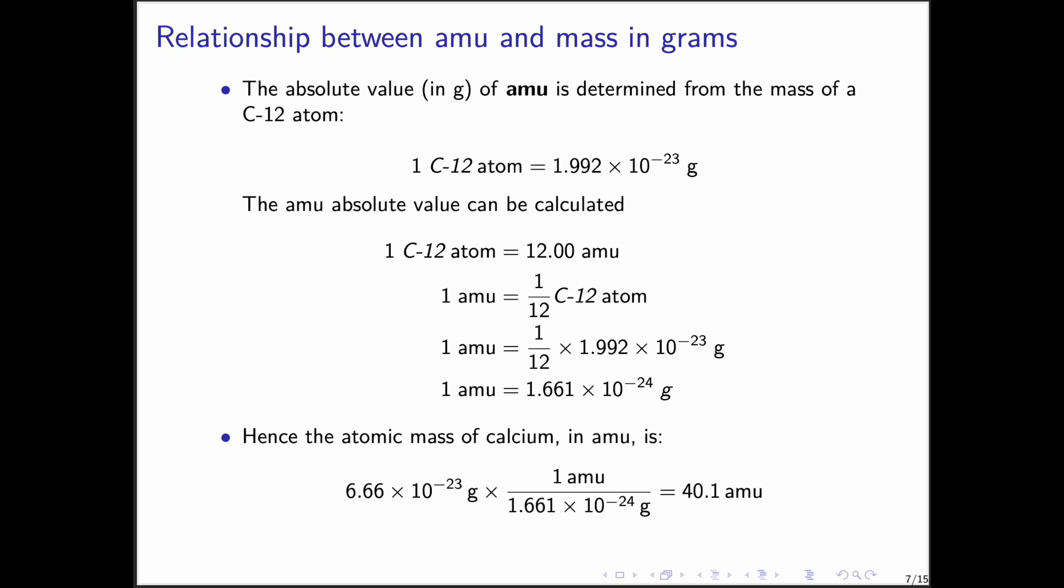We can even relate the atomic mass unit to grams. One carbon-12 atom weighs 1.992 times 10 to the minus 23 grams. Since one carbon-12 atom equals 12 atomic mass units, dividing gives us the value. One atomic mass unit equals 1.661 times 10 to the minus 24 grams.